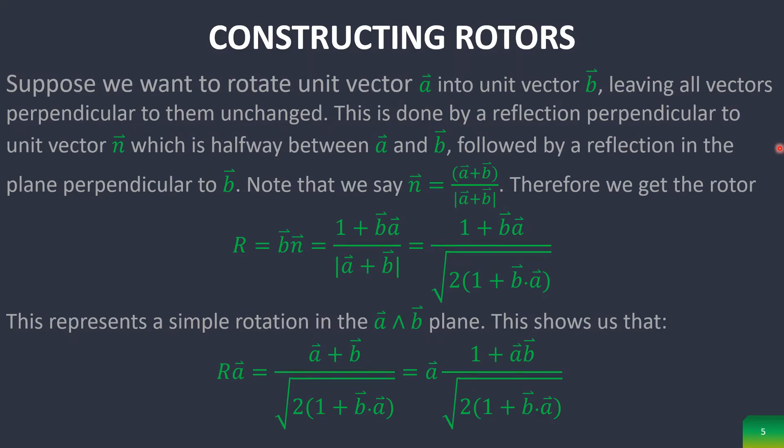Now for constructing a rotor, say we want to rotate a unit vector A into a unit vector B leaving all vectors that are perpendicular to them unchanged. This is done by a reflection perpendicular to the unit vector N which is halfway between A and B. You create N by adding up A and B and then dividing by their magnitudes added together.